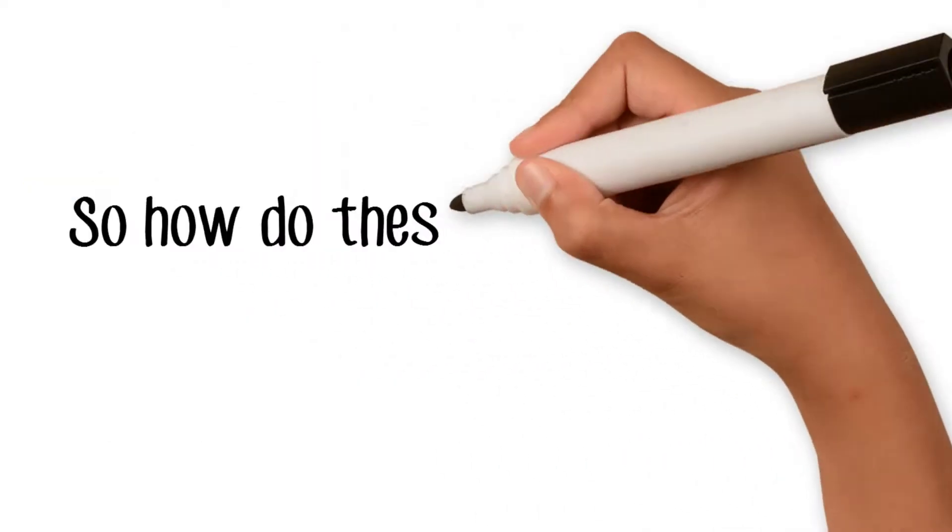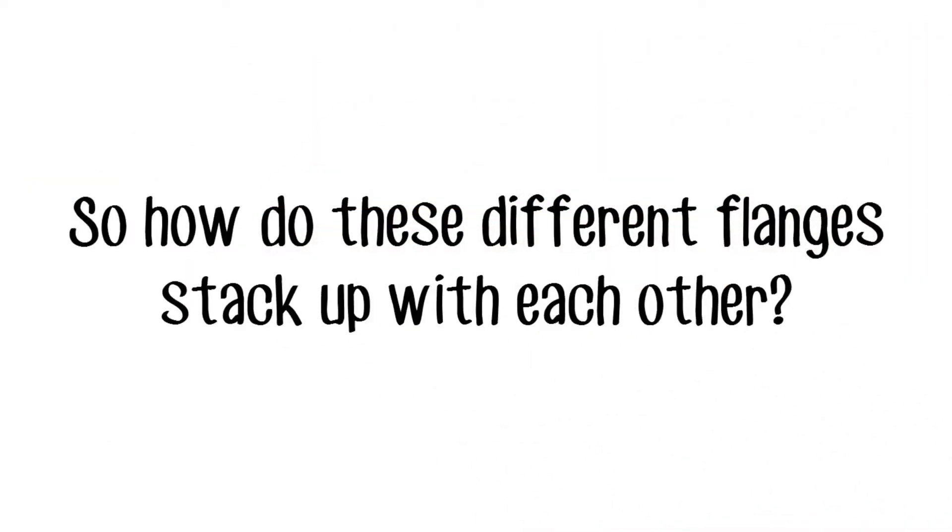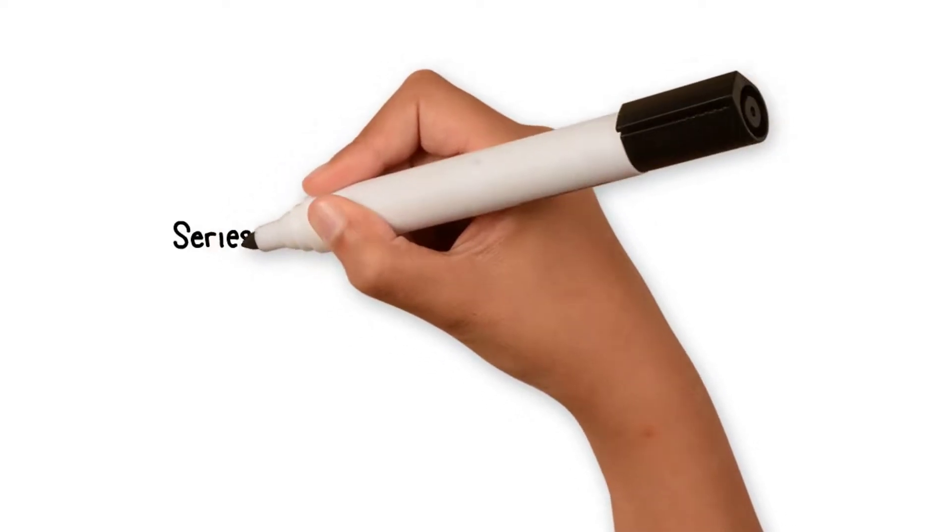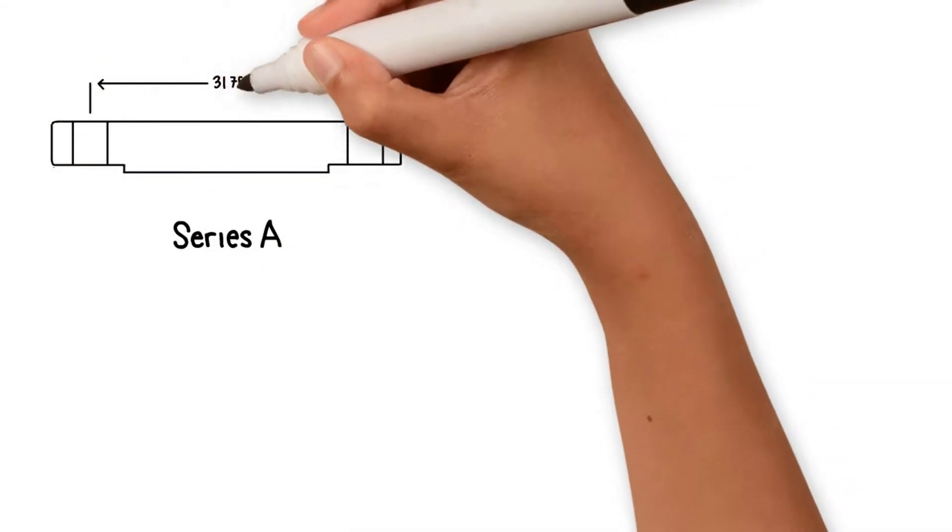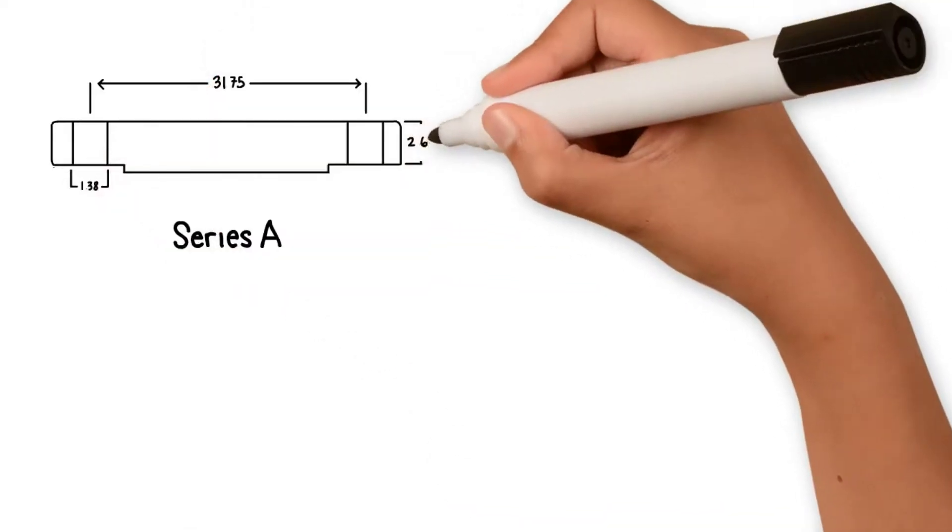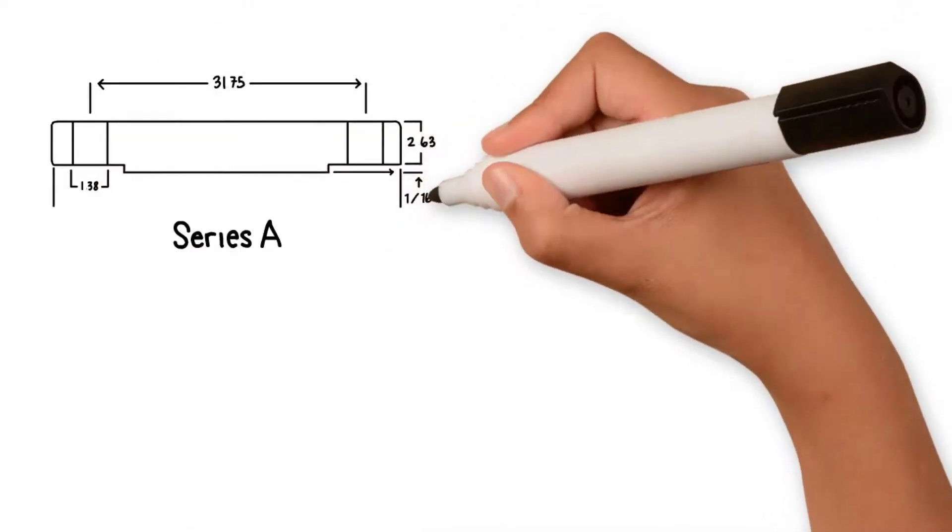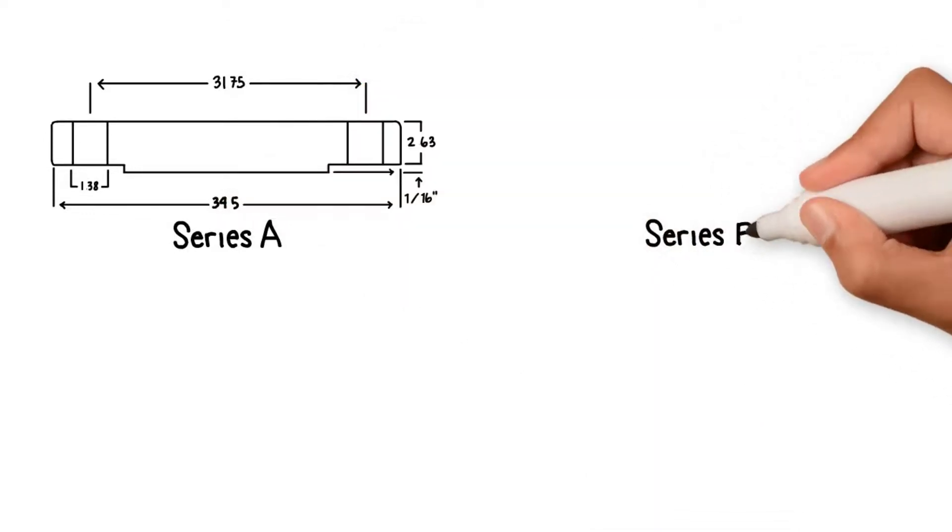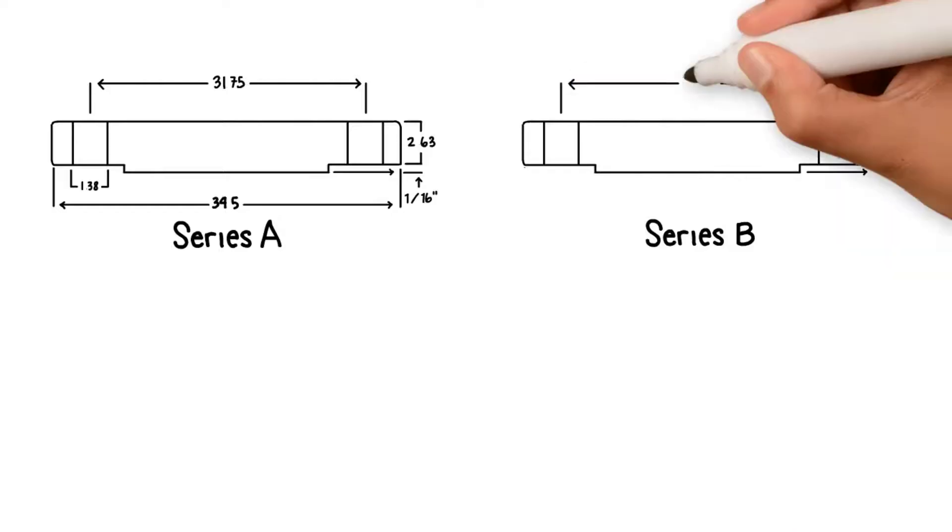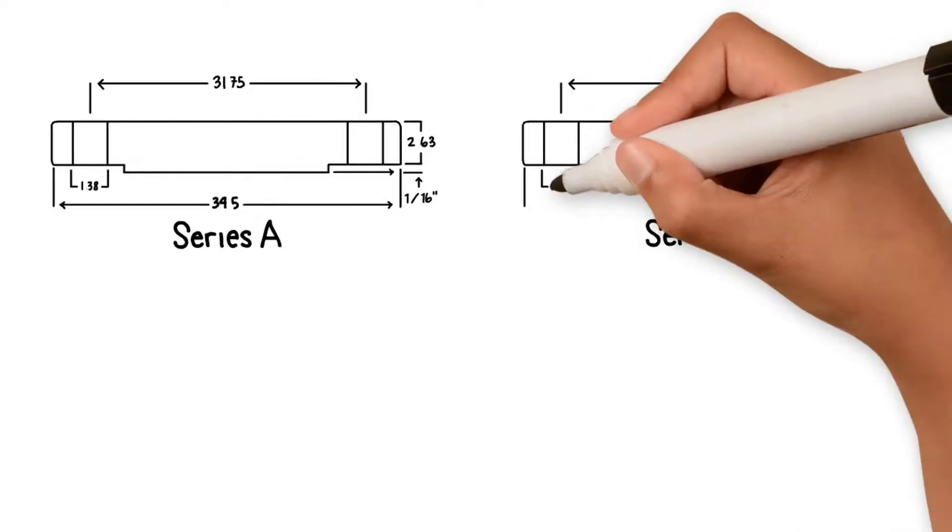So how do these different flanges stack up with each other? Take, for example, a 150-pound Series A blind flange in 26-inch nominal size. The flange OD is 34.5 inches, thickness is 2.63 inches, bolt circle is 31.75 inches, bolt hole diameter is 1.38 inches, and the number of bolts are 24.